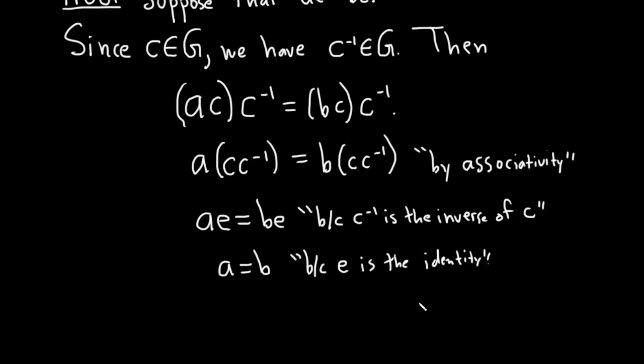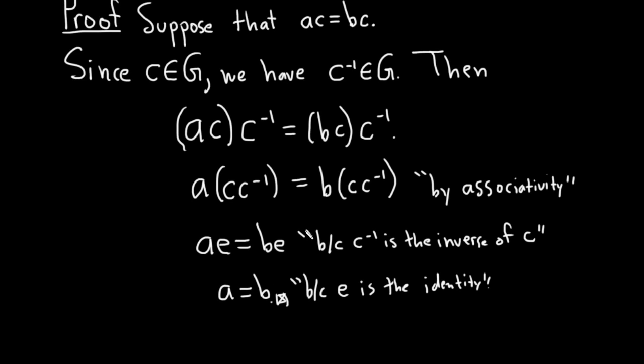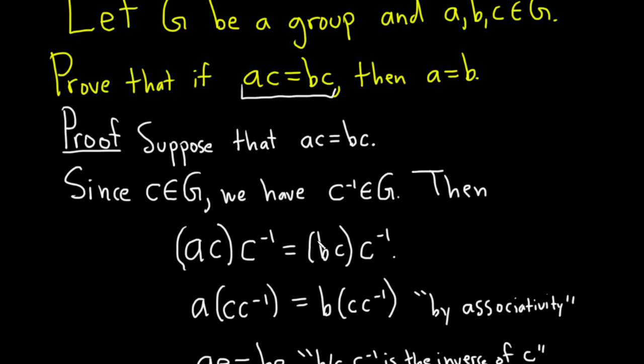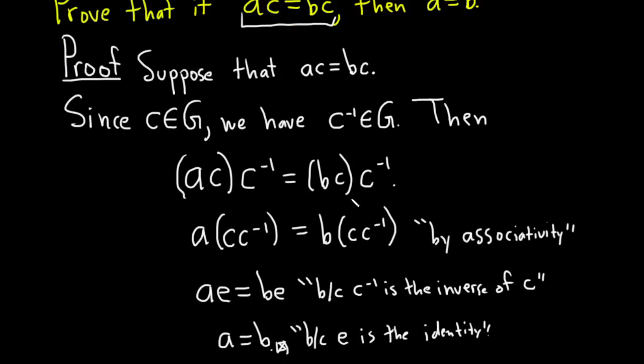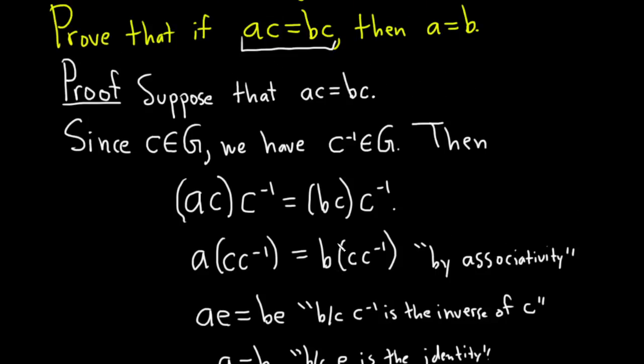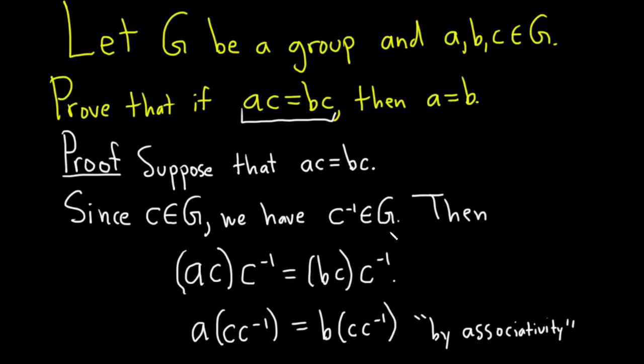Really nice. And that completes the proof. I'll just put a little box here to end the proof. This is called one of the cancellation laws in group theory. It has a name. It basically says you can cancel. I hope this video has been helpful to someone out there who is trying to learn. Good luck.